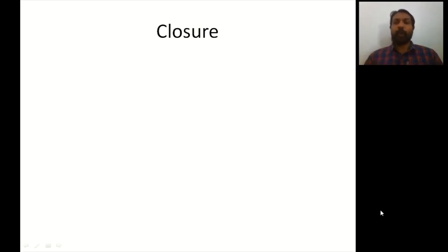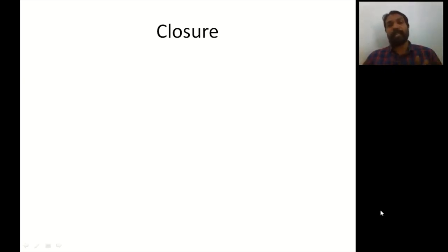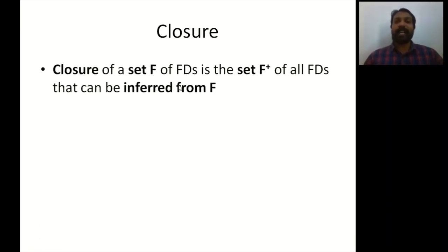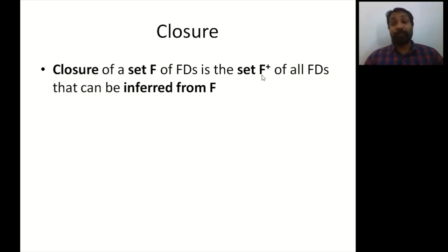We have already seen what is a closure of a set of functional dependencies in the previous lecture. If you have a set F of functional dependencies on a relation schema R and you want to find the closure of F — that is, all functional dependencies that can be inferred from F by applying Armstrong's inference rules — then we get the closure F+.